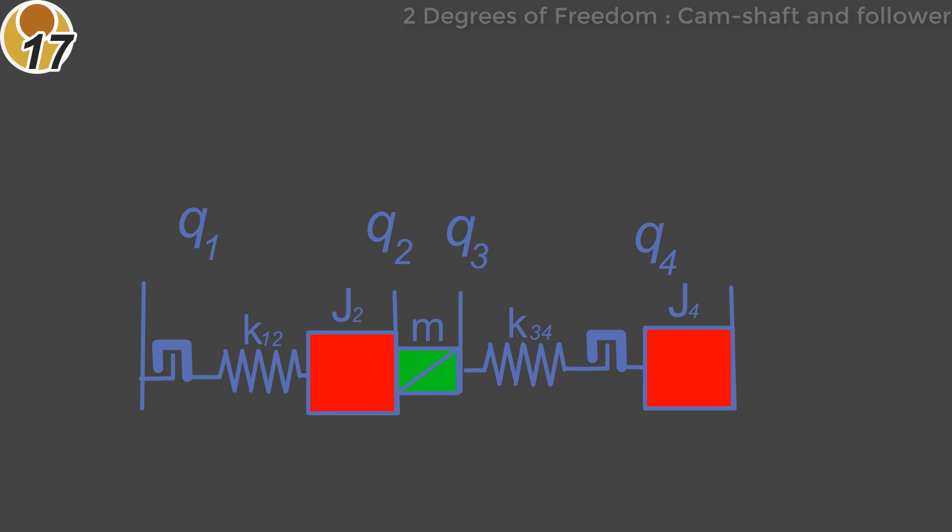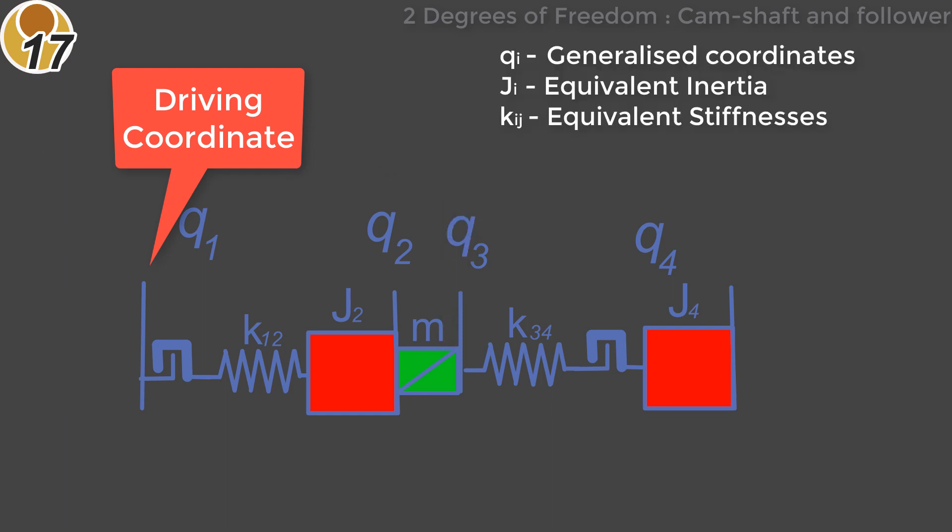These can be approximately modeled by combining all the mass in a kinematic chain into one coordinate and then connecting that mass to a driving coordinate with a spring of equivalent stiffness. The goal is to obtain a model that reflects the fundamental frequency of the real system as closely as possible.